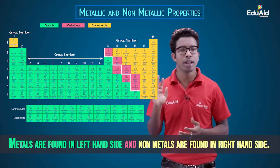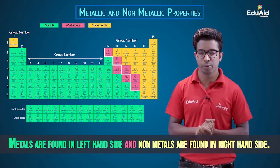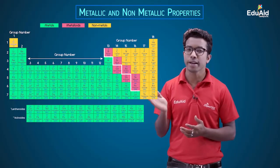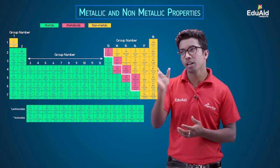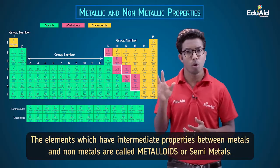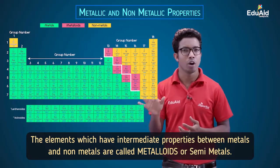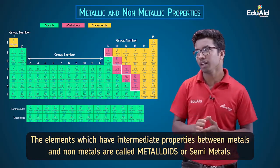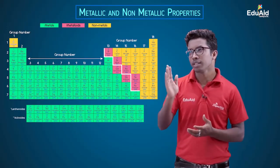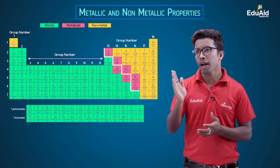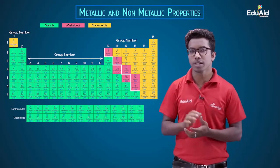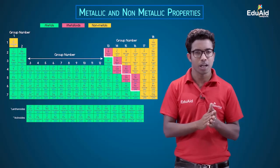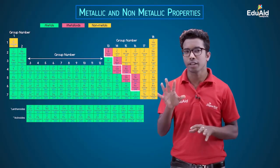Metals are found on the left-hand side of the periodic table and non-metals on the right-hand side. There is a zigzag line that separates metals from non-metals. The elements present along this zigzag line have the properties of both metals and non-metals — they are neither purely metals nor non-metals. These elements are called metalloids or semi-metals. The metalloids along this line are boron, silicon, germanium, arsenic, antimony, and tellurium.